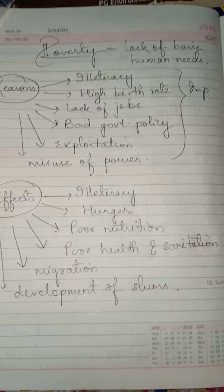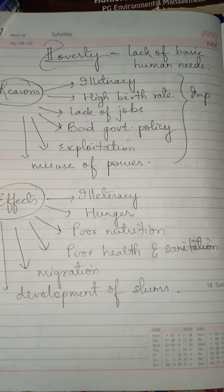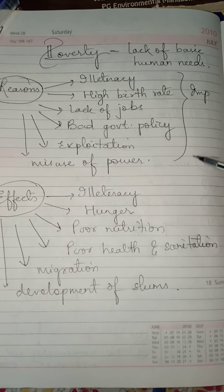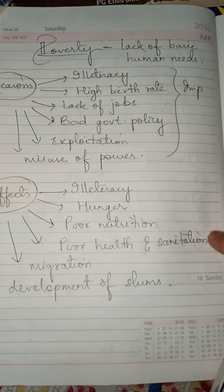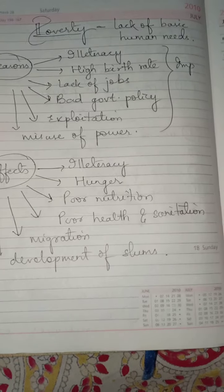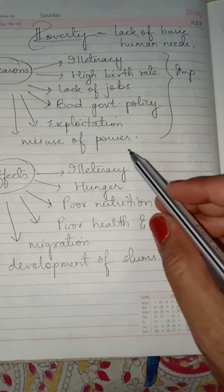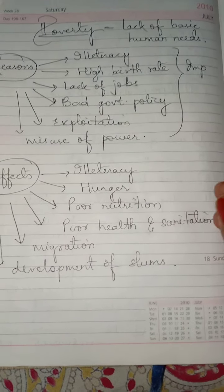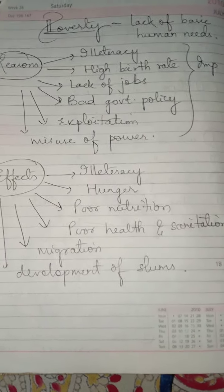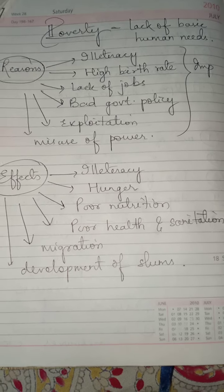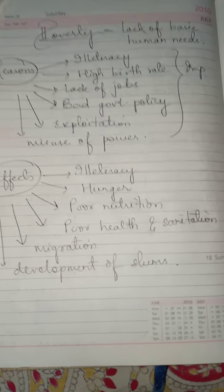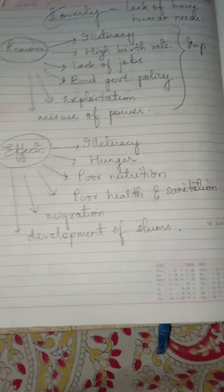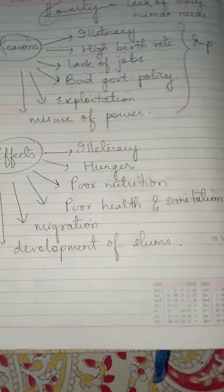Exploitation by the high class people and by the business sector over the poor sections of society is one reason why poverty prevails. Misuse of power by high officials is also one of the reasons why poverty is still prevailing in today's scenario.